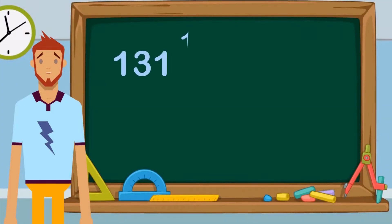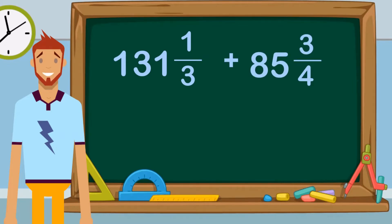We need to get the sum of 131⅓ and 85¾. You will notice that because the denominators are different, you can't simply add the numerators to get your answer. We have to convert the fractions so their denominators are all the same.